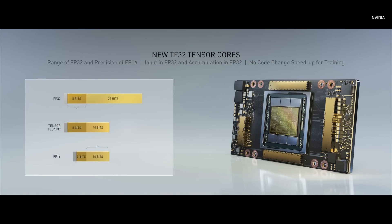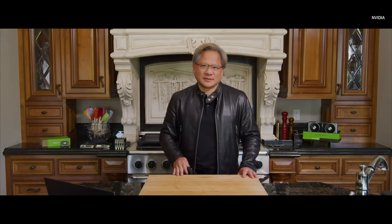TF32 has the range of FP32 and the precision of FP16. You input an FP32, it processes it with TF32, and accumulates it in FP32. As a result, no code change is necessary when you train. Ampere also has a new Tensor Core acceleration for sparsity. It takes advantage of the fact that most neural networks are very heavily sparse. It starts with a dense network, zeroes out the weights that are small or close to zero, and then retrains that network. As a result, this network can be compressed two to one, and using the same data structure and same pipeline, we can effectively accelerate processing by a factor of two.